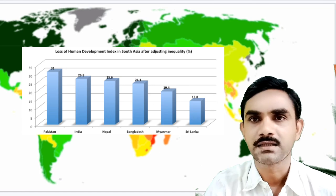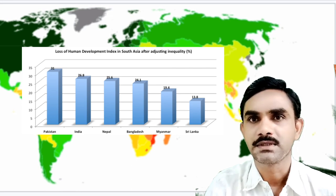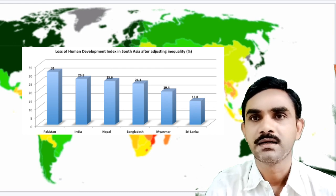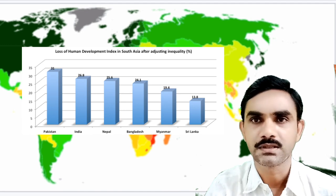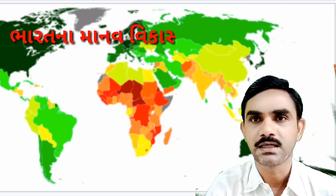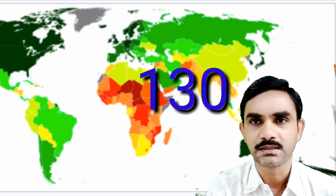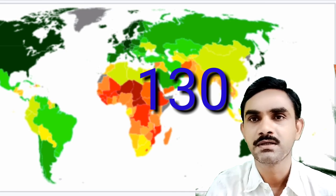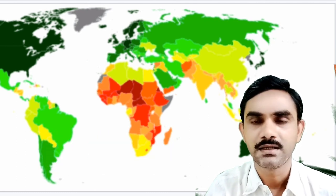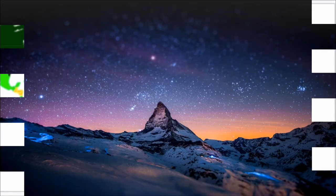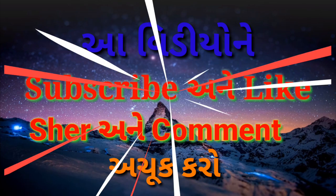ભારત કરતા ઓછો માનવ વિકાસ ધરાવતા પડોશી દેશો: બાંગ્લાદેશ, ભૂટાન, નેપાળ, મ્યાનમાર, અફઘાનિસ્તાન. જ્યારે શ્રીલંકા, માલ્દીવ અને ચીન ભારત કરતા ઉચ્ચ માનવ વિકાસ ધરાવે છે. ભારતના માનવ વિકાસ આંકની વાત કરીએ તો, 188 દેશોની અંદર ભારતનો ક્રમ 130મો છે અને ભારતનો માનવ વિકાસ આંક 0.624 છે.